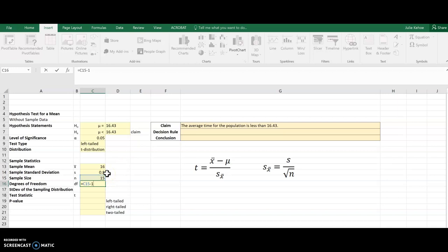So if you change to a different problem, you just change the n and it changes everything. So there's my degrees of freedom. I need the sampling distribution, here's the formula to remind me how I calculate that. So I'll have Excel do the heavy lifting for me. S divided by the square root of n. And there's the standard deviation for the sampling distribution.